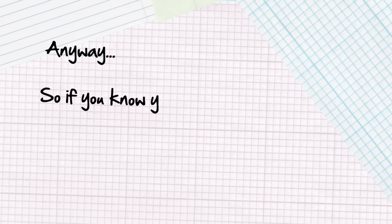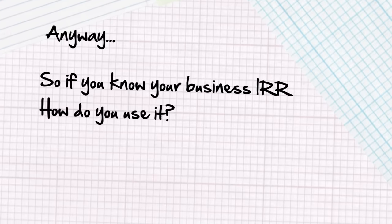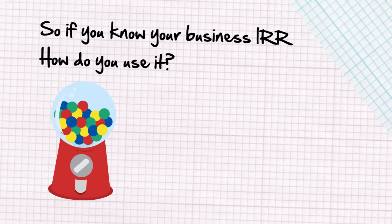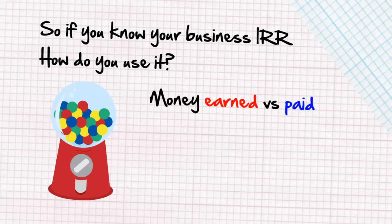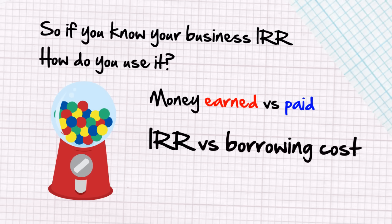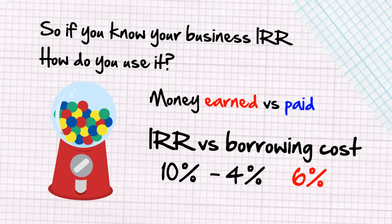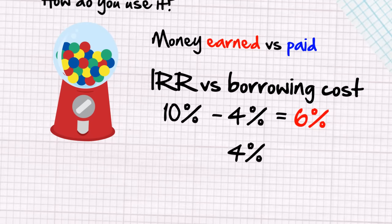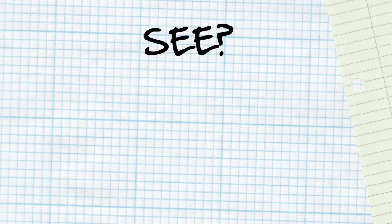So if you know your business's IRR, how do you use it? Let's say you borrowed money to buy a candy machine for business. When you compare the money you earn from the candy machine with the amount you paid for it, you can compute the candy machine's IRR. You can then compare it to your borrowing costs. If your business borrows money from the bank at a 4% interest rate and your IRR is 10%, then you win 6% — because 10% minus 4% is 6%. On the other hand, if you borrow at 4% but your candy machine's IRR is only 3%, then you lose. It's a very simple concept.